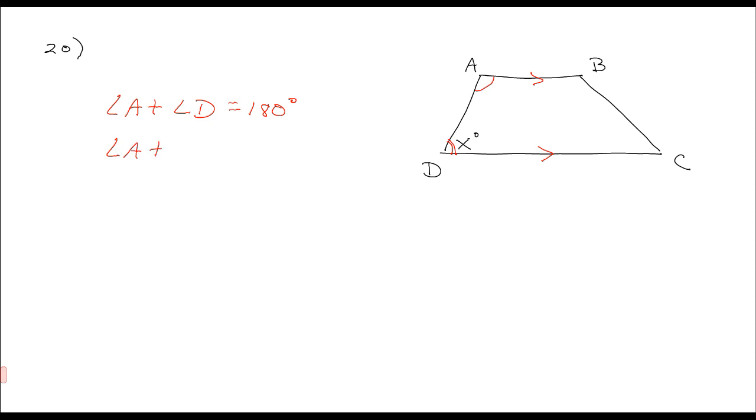Well, angle D is x degrees, whatever x is. And they just want to know what angle A is in terms of x. So we don't really care what x is. So subtract the x to the other side, and you have 180 degrees minus x degrees. And so you are just looking at answer F.